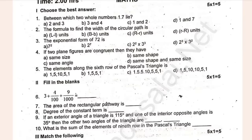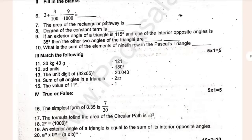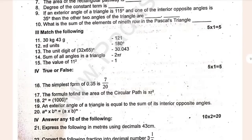Between which two whole numbers does 1.7 lie? The formula to find the width of the circular path is dash. Match it — true or false.